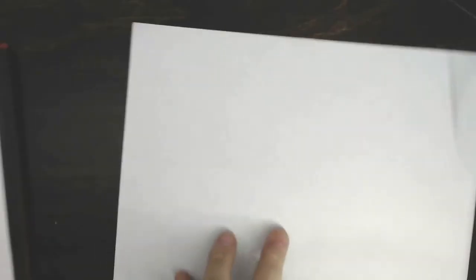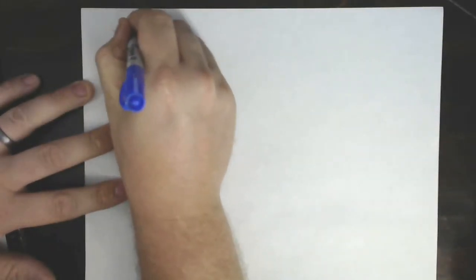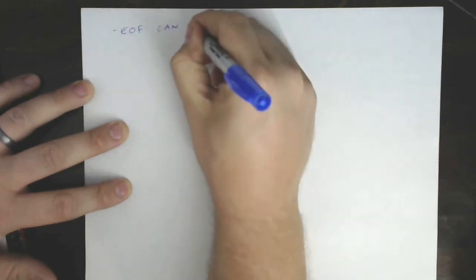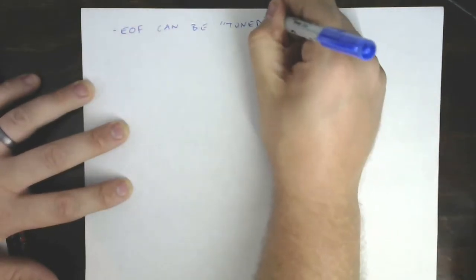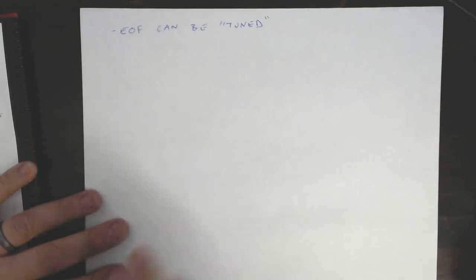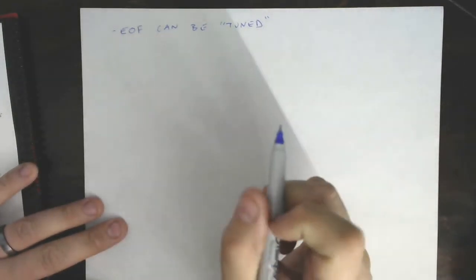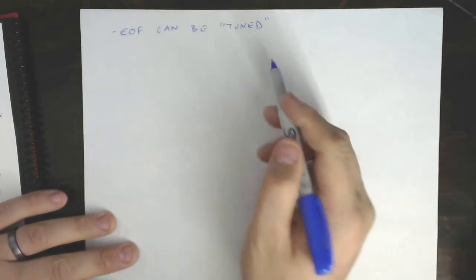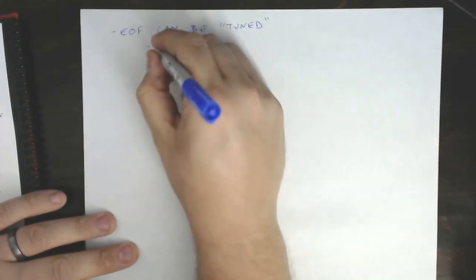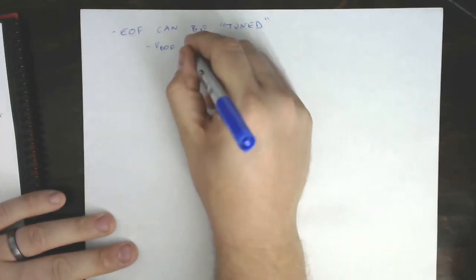But there is yet another way in which EOF can be a great tool for driving these separations, and that is that EOF, electro-osmotic flow, can be tuned. What does that mean? It means that we can make some modifications that directly affect the velocity of electro-osmotic flow, which, as we'll see in just a second, can be really beneficial to designing separation methods. So how can it be tuned? We can tune velocity, so velocity EOF can be manipulated. Here's what that looks like.